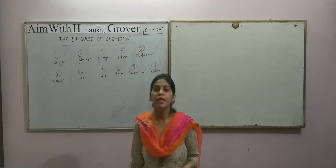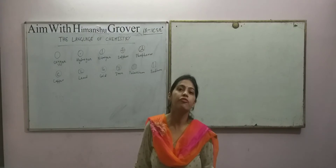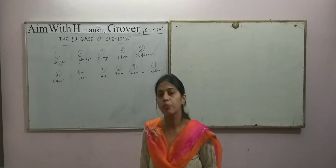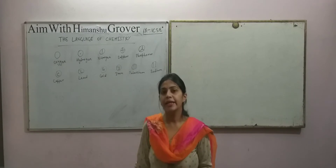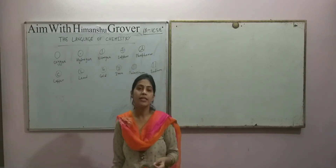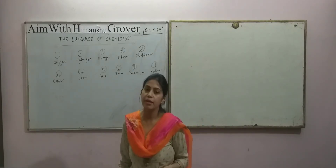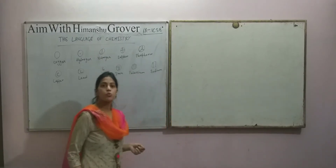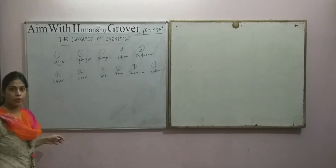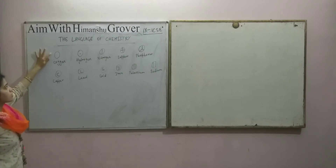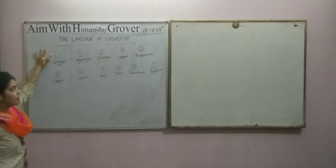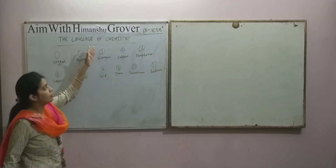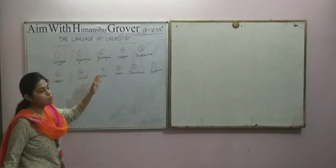A symbol is a brief representation of the name of the element — it is a shorthand notation. In 1808, Dalton devised a list of symbols for various elements. His system of circular symbols was very cumbersome to draw. He used a circle for oxygen, a circle with a dot inside for hydrogen, and a circle with a line for nitrogen, and so on.